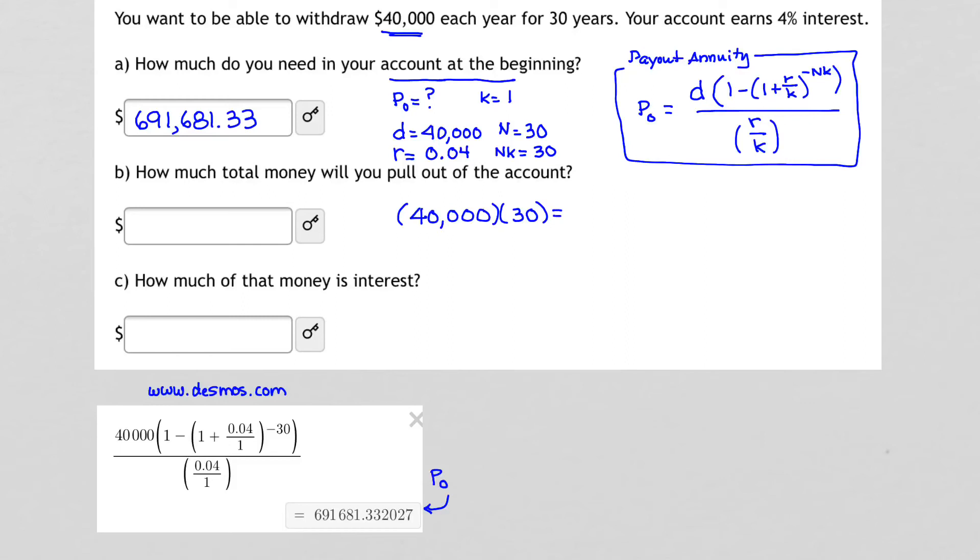And so if I take $40,000 each year for 30 years, I multiply that together and I get that I'm going to be able to withdraw the following total. One million, $1,200,000.